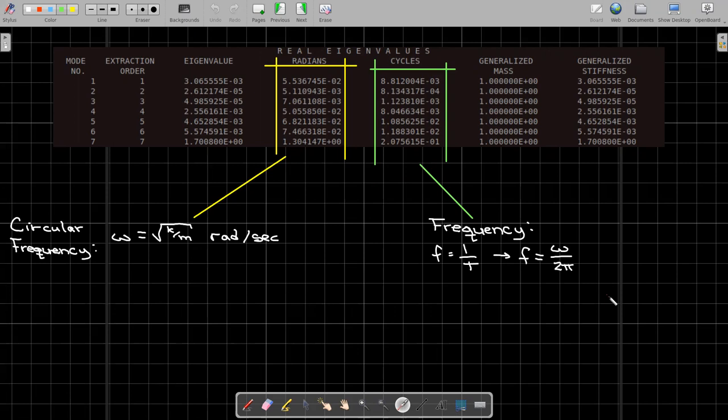And these values, the circular frequency and the frequency, are so important that they're printed out. And you can see that there's not just one, because it's a very complex object. But still, it's the same basic idea. Everything builds off this very simple spring mass model.